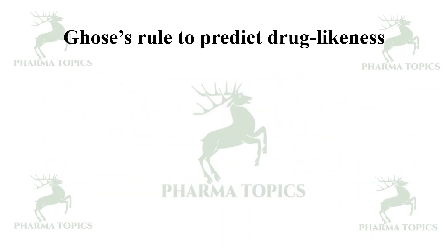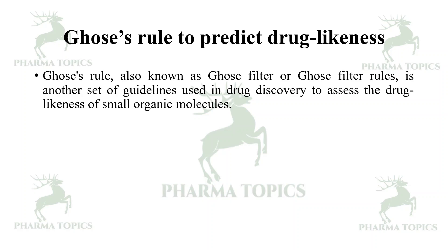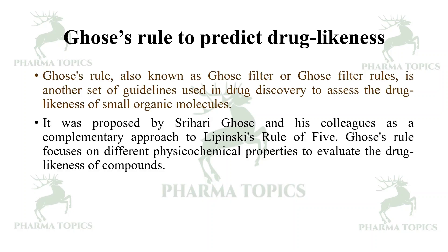The next rule is the Ghose Rule, also known as the Ghose filter. It was proposed by Sri Hari Ghose and colleagues as a complementary approach to Lipinski's Rule of Five, focusing on different physicochemical properties to evaluate drug likeness of small organic molecules.